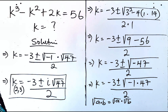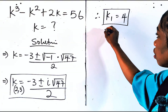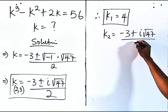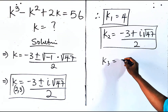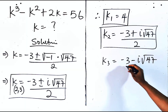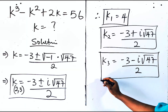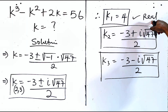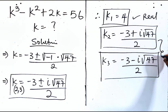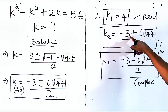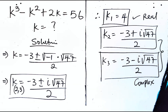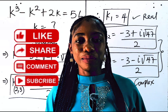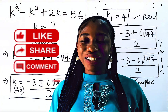Now let's gather the values together. The first value of k is 4. The second value is k equals negative 3 plus i root 47, divided by 2. The third value is k equals negative 3 minus i root 47, divided by 2. These are the three values of k. Remember we said at the beginning that because this is a cubic, we expected three values. This first value is the real solution because it can be found on the number line. The other two are complex solutions because they contain both real and imaginary parts. I hope you really learned something today — thank you and see you in my next class.